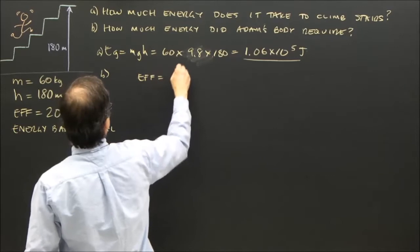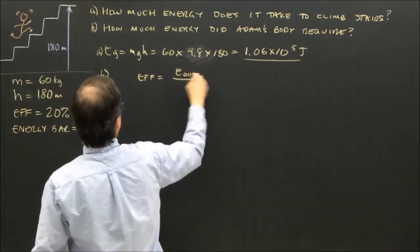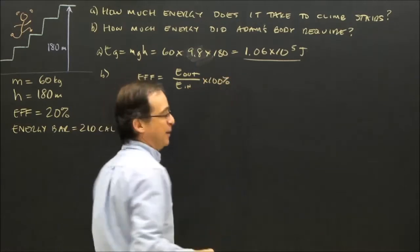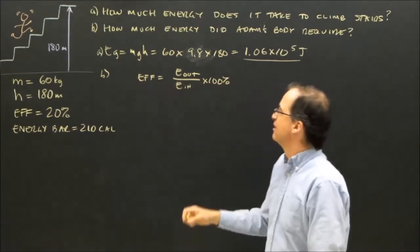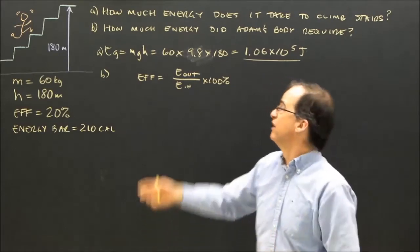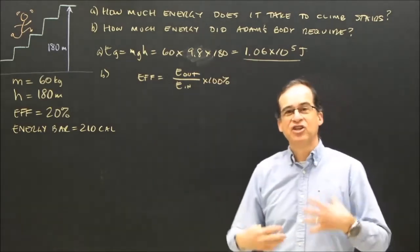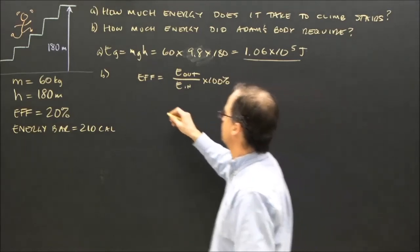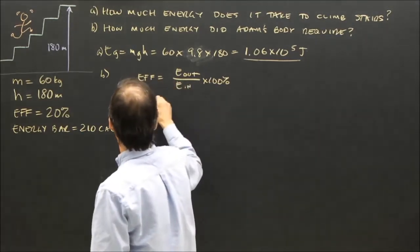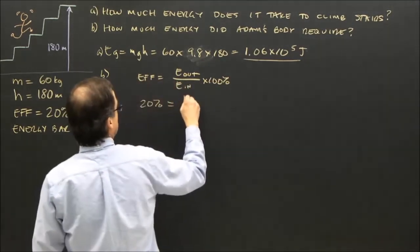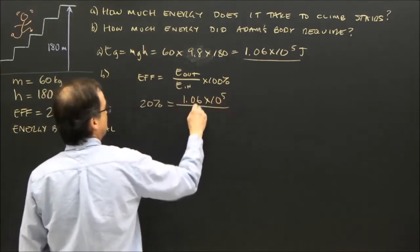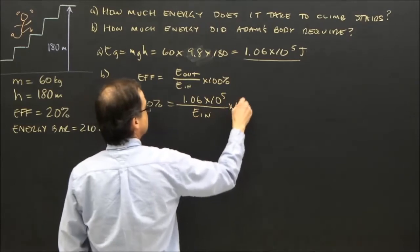Efficiency is energy out divided by energy in times 100%. So the energy out is what he got out of this, which is this one. The energy in is what he put in, which is a greater amount. So this is the energy out. So we have 20% equals 1.06 times 10 to the 5 divided by the energy in times 100%.